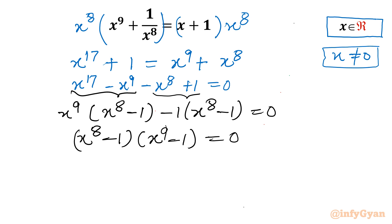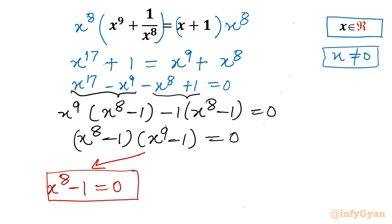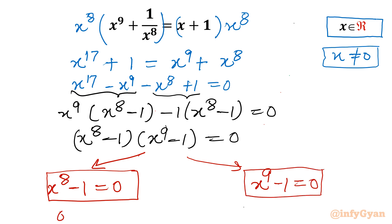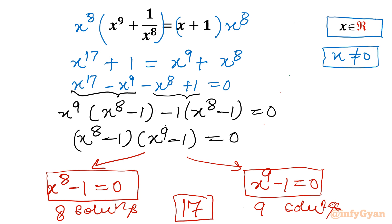Now f·g = 0 means either f = 0 or g = 0. So equation 1 is x^8 - 1 = 0 and equation 2 is x^9 - 1 = 0. The first equation has 8 solutions and the second has 9 solutions, giving 17 solutions overall. We have to find out how many of these are real.